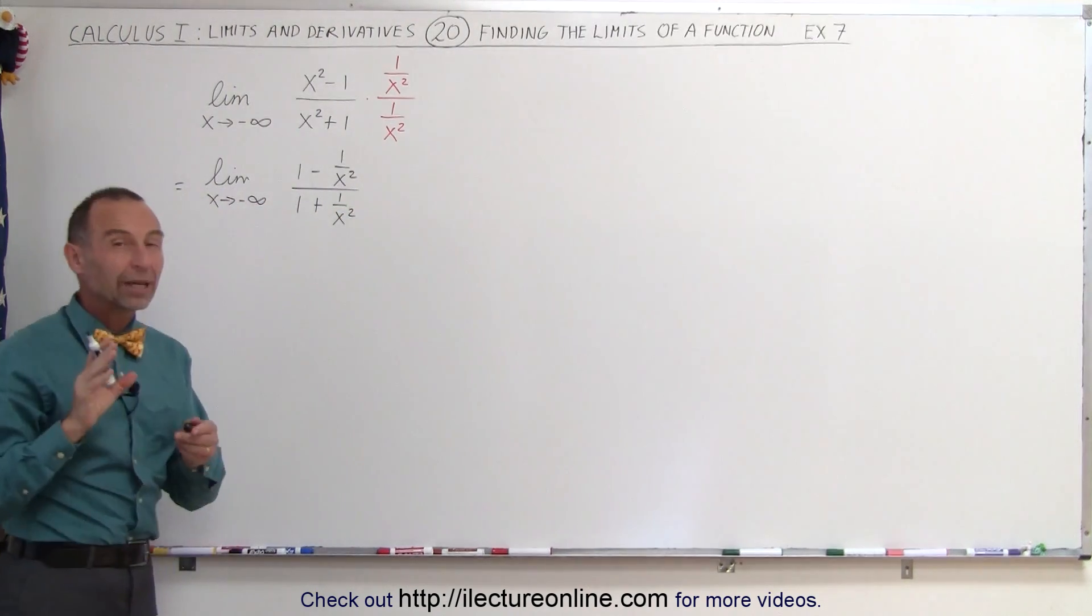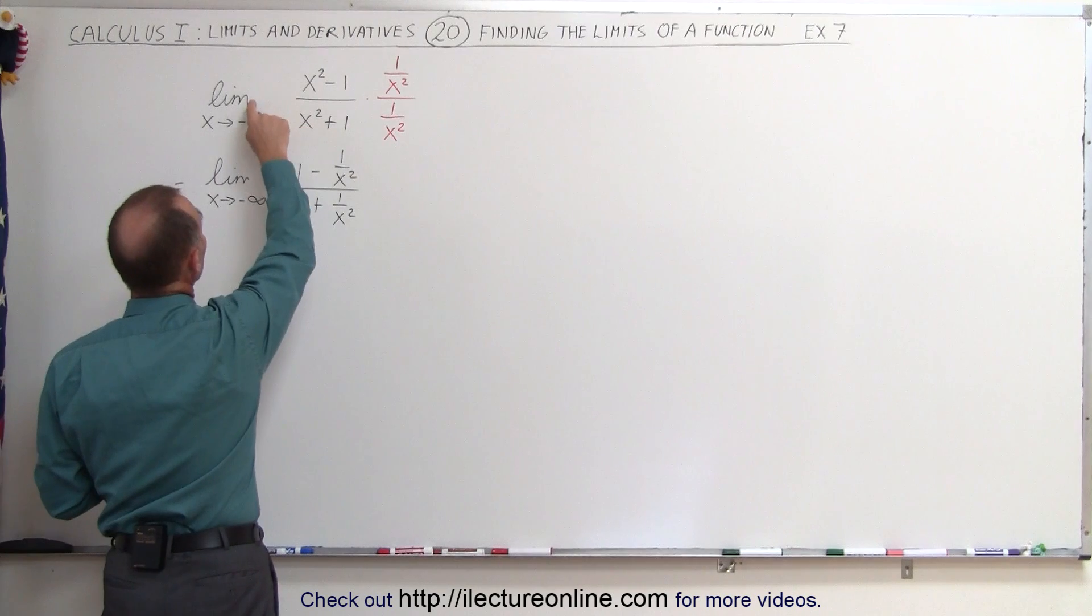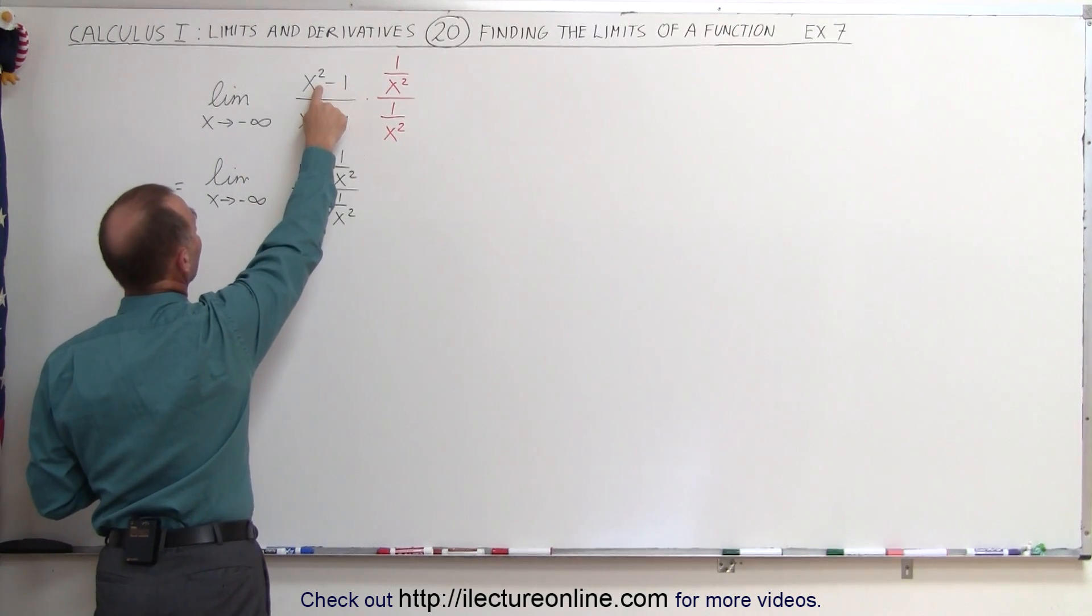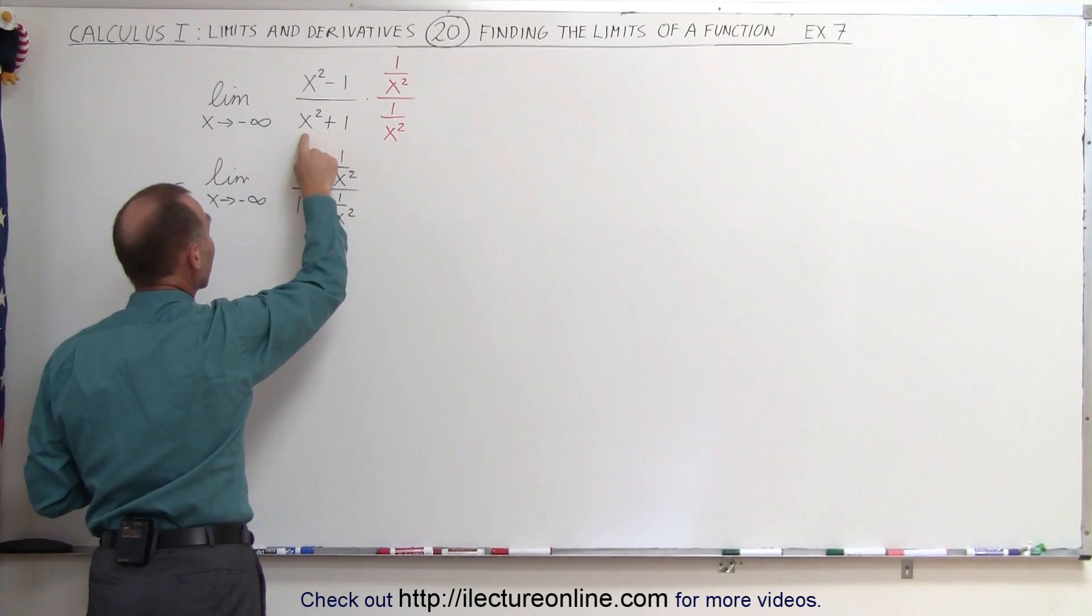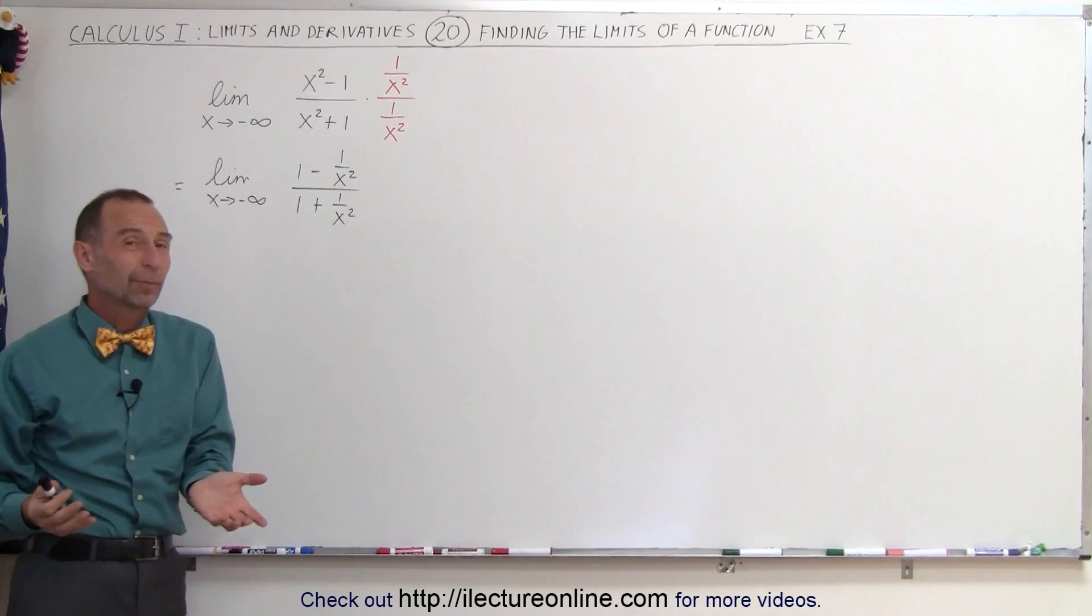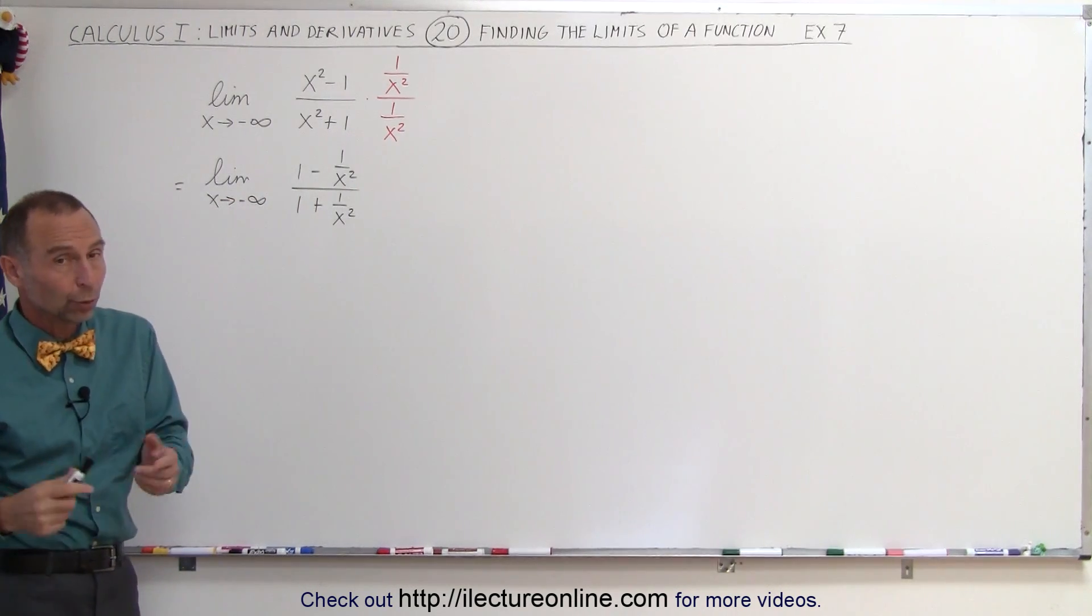Now when we do that, we can now take the limit. Before, if we didn't do that, we put in the limit on the numerator, we get infinity squared. In the denominator, we get infinity squared. So infinity squared divided by infinity squared wouldn't work very well.